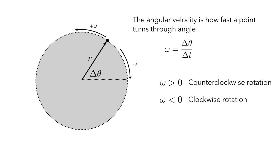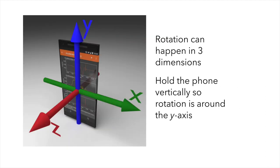Of course, rotation is not just a one-dimensional quantity. In reality, rotation can happen in three dimensions. Here, in physics 124, we are going to restrict our attention to single rotational axes. To make sure that we are all consistent, we want to be holding our phones vertically upward so that the rotation is around the y-axis, as is shown in this fancy three-dimensional rendering here.